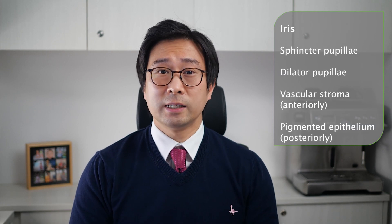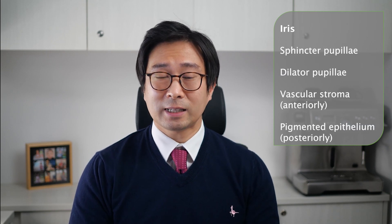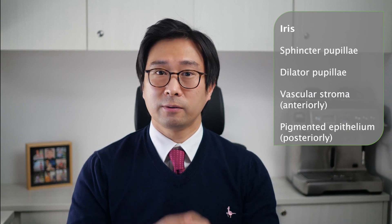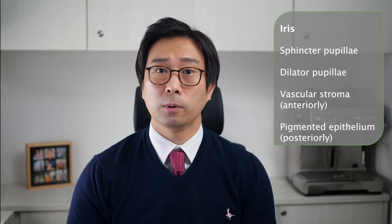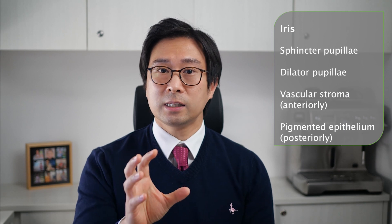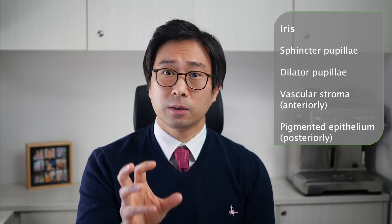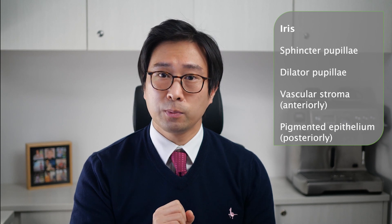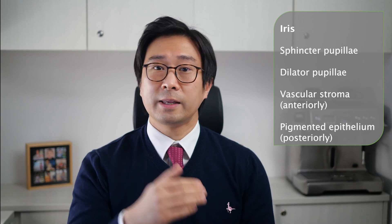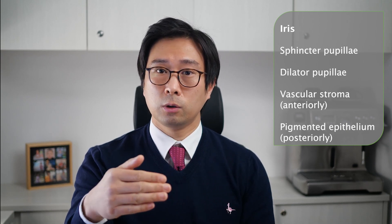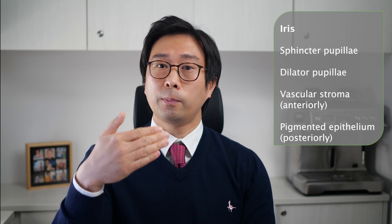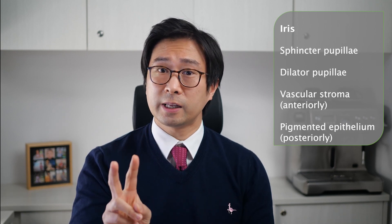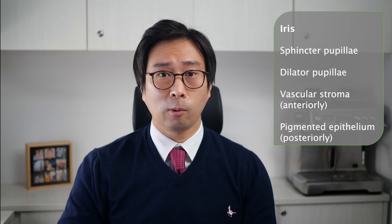The next structure is the iris, that's the coloured part of the eye and that limits light entry into the eye, forming a circle around the pupil. It consists of two muscles: the sphincter pupillae that contracts the pupil, and the dilator pupillae that does the opposite. There is an anterior part of vascular stroma and on the posterior there's a heavily pigmented layer, two cells thick, that blocks the light.